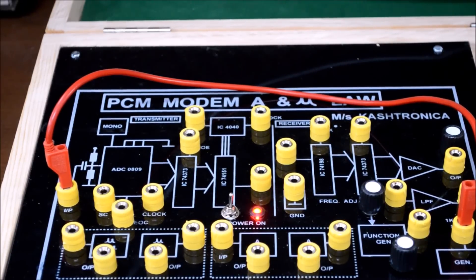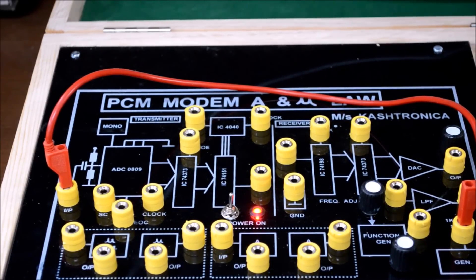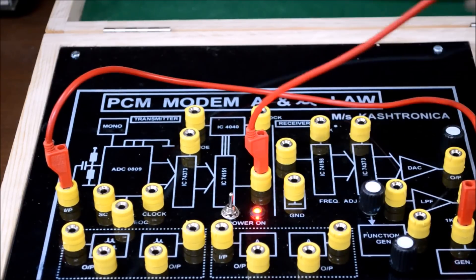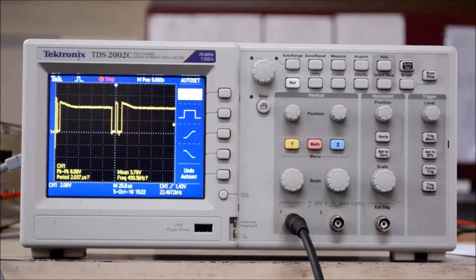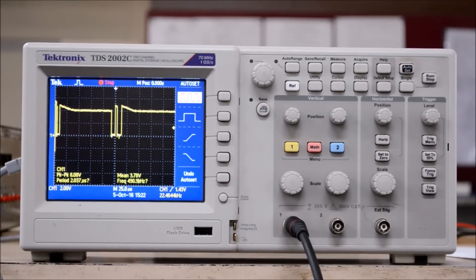Next we need to observe the PCM signal. The PCM signal can be obtained from the port present over here. Connect the other end to the DSO. You can observe the PCM waveform as follows.